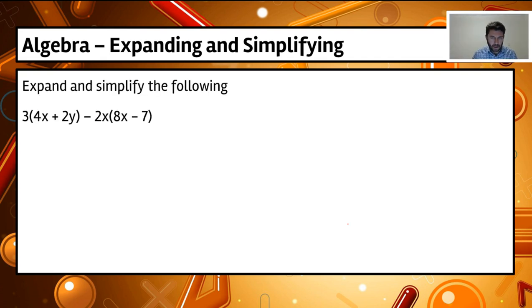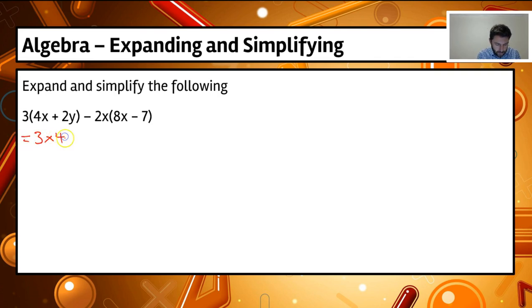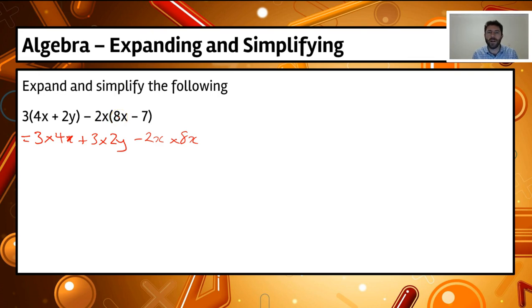Let's have a look at another example. We have 3 brackets 4x plus 2y in brackets, then minus 2x brackets 8x minus 7. We expand this out: 3 times 4x, plus 3 times 2y, then minus 2x times plus 8x — minus and a plus gives a minus, so minus 2x times 8x — and then minus 2x times minus 7. A minus and a minus gives a plus, so plus 2x times 7.